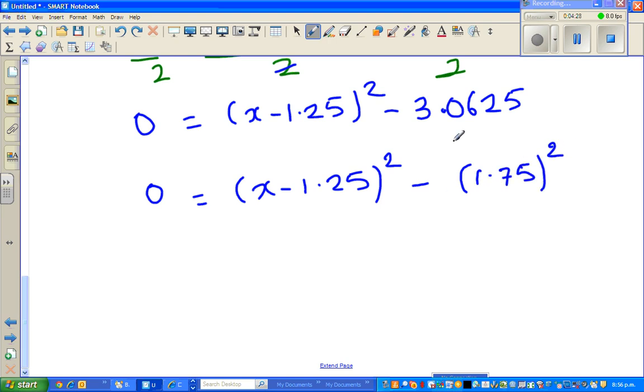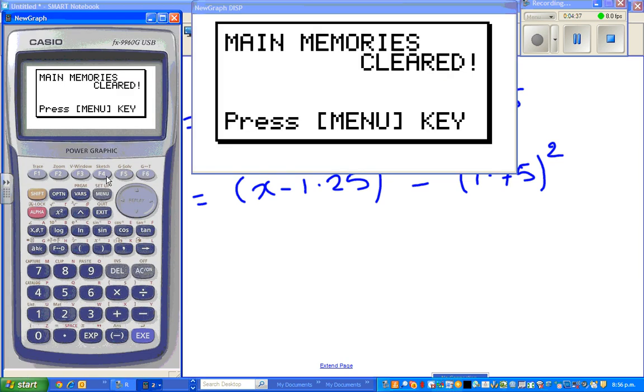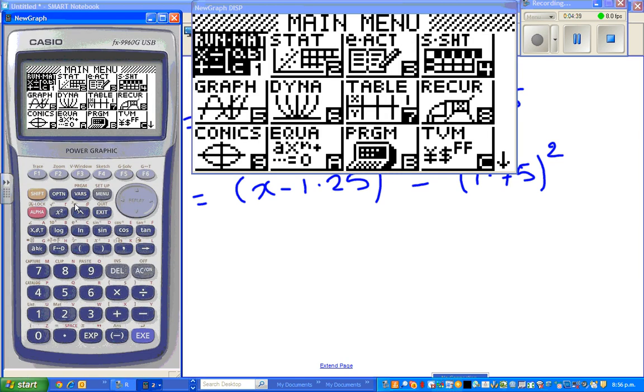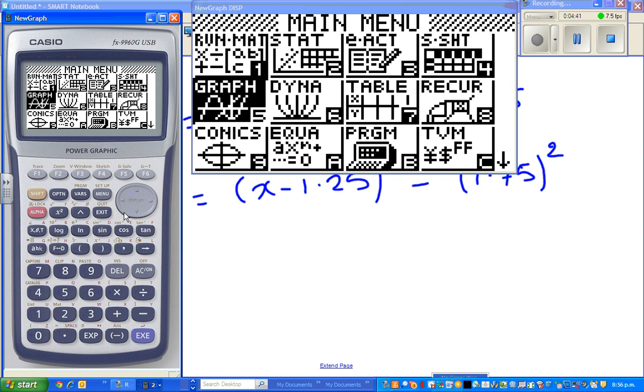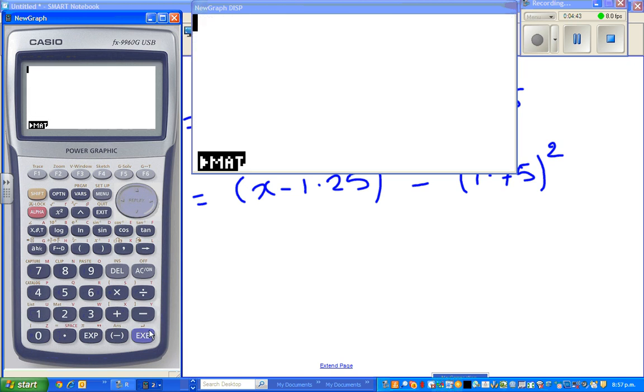So this is 0 is equal to x minus 1.25 squared minus 3.0625 is 1.75 squared. Now how did I get that? So I make a guess, this probably, I want to write this as a perfect square. So this is how I did. I went to the calculator.